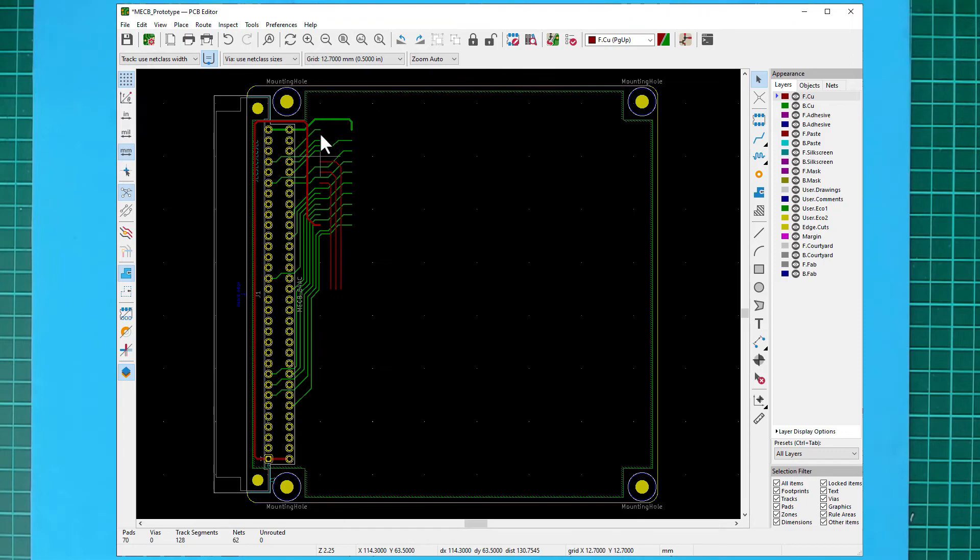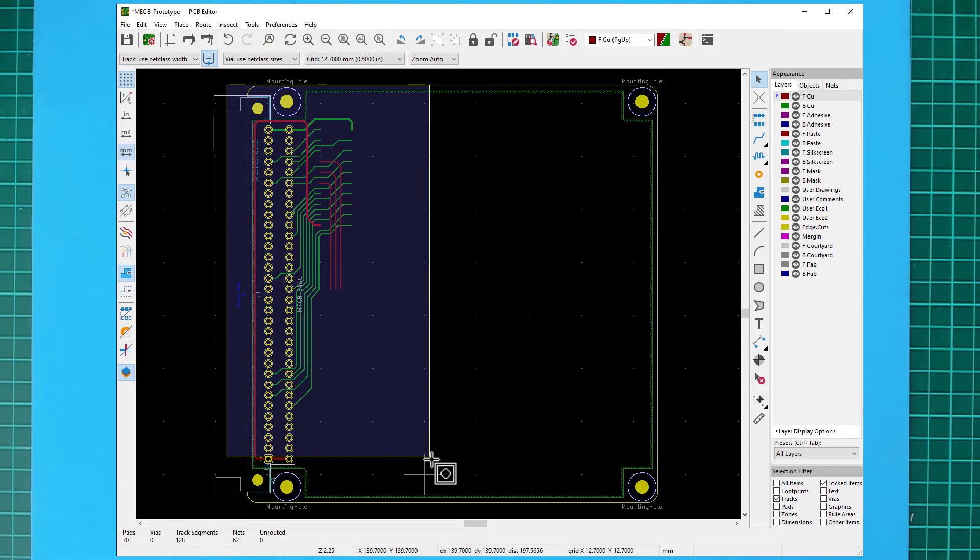That's deleted the PLD from the PCB, but we still have all the tracks that were routed to the PLD. So if we then use the selection filter to select only the tracks,